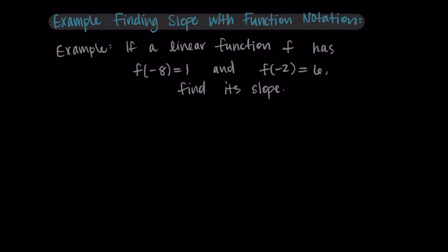So this is what I mean by function notation when we have the information given to us with our function f. f(-8) = 1 and f(-2) = 6. So let's go back to our slope formula. The slope is the change in y over the change in x, except this time we're going to use that function notation. So it would be the change in outputs, which is the change in f(x) divided by the change in inputs, the delta x.